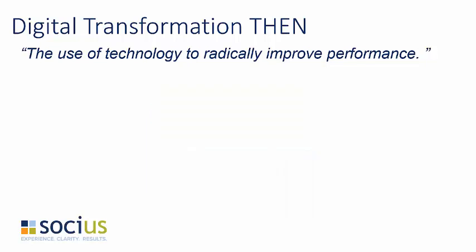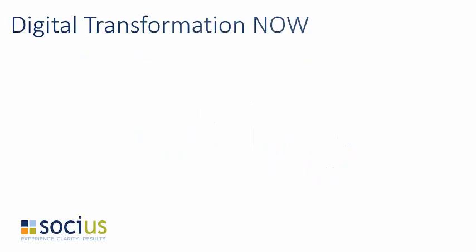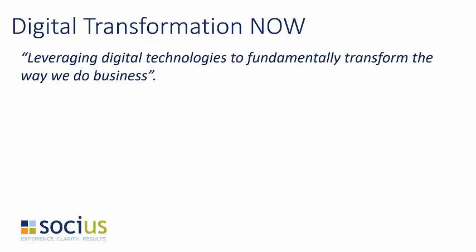Today, it's no longer just about implementing technology that automates processes and drives productivity. The third platform — the cloud computing platform that combines cloud, social, mobile, and big data — has opened up new possibilities. Organizations started leveraging these interconnected digital technologies to modernize business transactions, such as integrated e-commerce and mobile apps for field service and time entry. Digital transformation today is defined as a much broader, more impactful approach to how we leverage digital technologies to fundamentally change the way we do business.